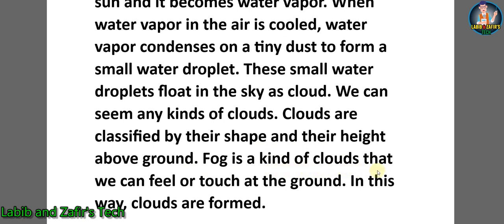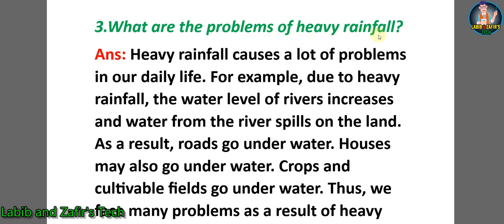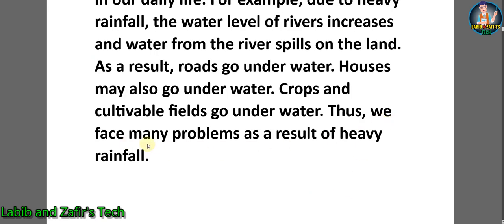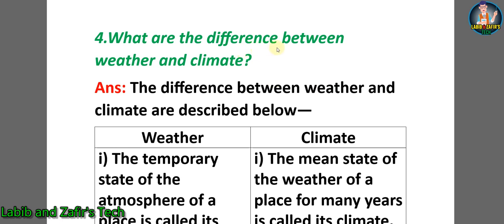Fog is a kind of cloud that we can feel or touch at the ground. In this way clouds are formed. Question three: what are the problems of heavy rainfall? Answer: heavy rainfall causes a lot of problems in our daily life. Due to heavy rainfall, the water level of rivers increases and water from the river spills onto the land. As a result, roads go under water, houses may also go under water, and crops and cultivated fields go under water. Thus we face many problems as a result of heavy rainfall.